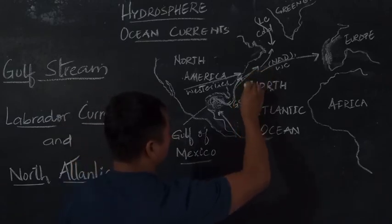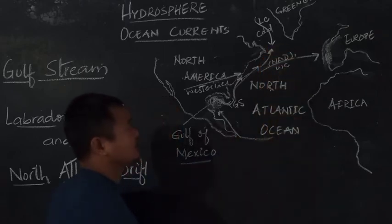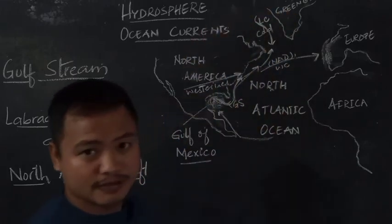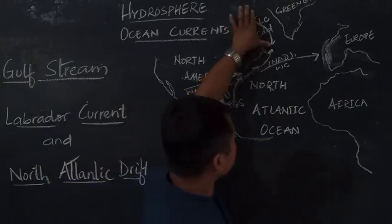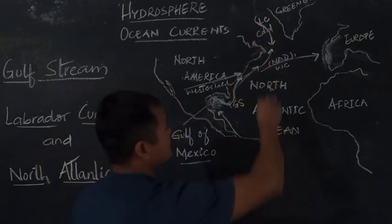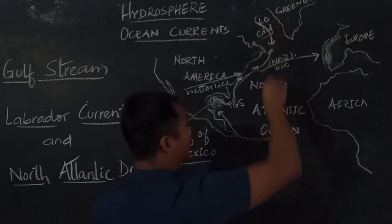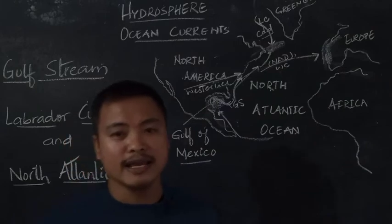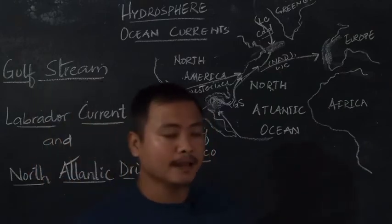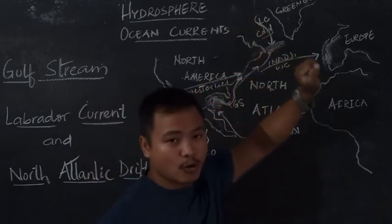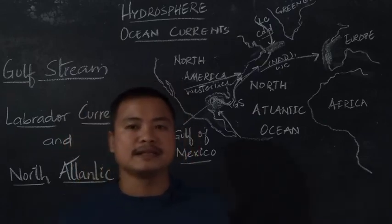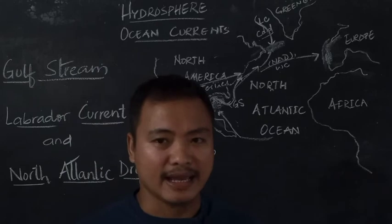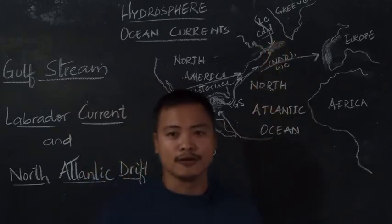A portion of the Gulf Stream moves further north and meets a current coming from the Arctic region, between Greenland and the Canadian province. This current coming from the Arctic region is known as the Labrador Current, and it is a cold current. So the Labrador Current meets the warm waters of the Gulf Stream, resulting in the formation of dense fog in the areas of Newfoundland. As these cold and warm waters meet, they also facilitate the growth of planktons, which attracts lots of fish, giving rise to the famous Newfoundland fishing zone.